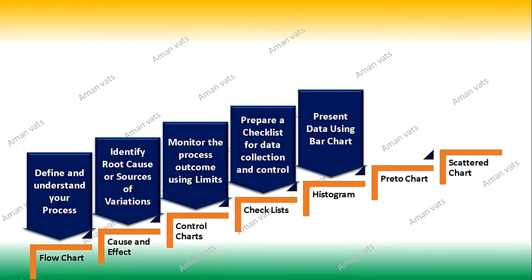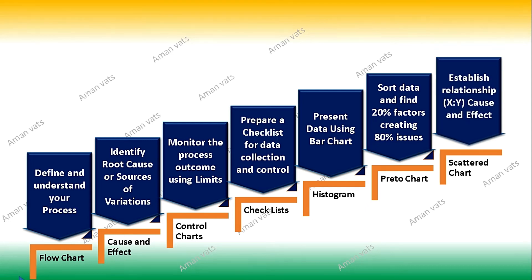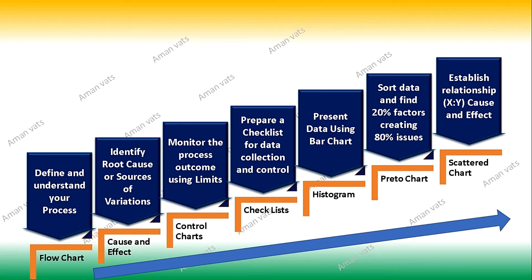The histogram is used to present data using bar charts to derive decisions and check current conditions. The Pareto chart is used to sort and define the 20 percent of factors creating 80 percent of the issues. The scatter chart establishes the relationship between X and Y — cause and effect — on multiple parameters and multiple axes, which I'll explain when talking about scatter charts.